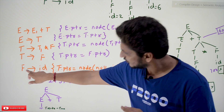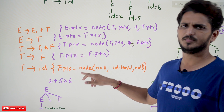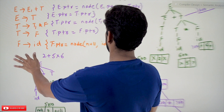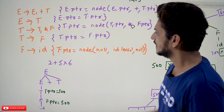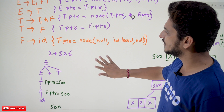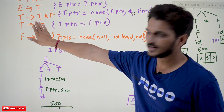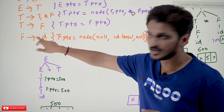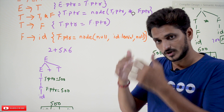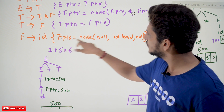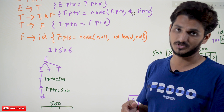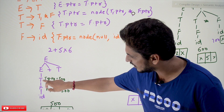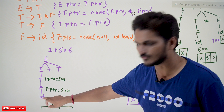Let's understand what these semantic conditions mean. We will go from the bottom up. We will take the same example 2 + 5 * 6 and elaborate the first rule, then the remaining things will be easy to understand. We have written the context-free grammar and the recursive descent parsing for it. During that execution, we need to add these extra semantic conditions.